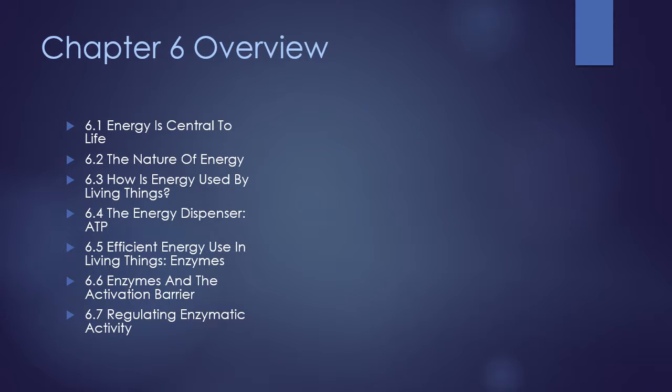The sections we'll cover in this chapter are: 6.1, energy is central to life; 6.2, the nature of energy; 6.3, how is energy used by living things; 6.4, the energy dispenser called ATP; 6.5, efficient energy use in living things or enzymes; 6.6, enzymes in the activation barrier; and 6.7, regulating enzymatic activity.